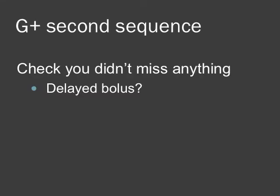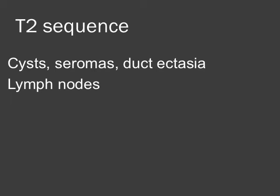Quickly run through the second gadolinium-enhanced sequence in a similar manner to see if there are any lesions appearing on that sequence. Sometimes there's a delayed bolus, so the first sequence may not be the peak of enhancement — it may actually be into the second sequence rather than the first. Then run through the T2 sequence separately, looking for cysts, seromas, ductilectasia, and lymph nodes, which are commonly bright on T2.